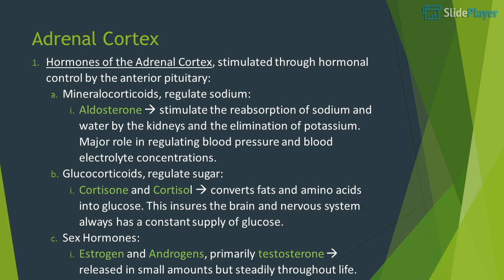Adrenal cortex hormones are stimulated through hormonal control by the anterior pituitary. Mineralocorticoids regulate sodium: aldosterone stimulates the reabsorption of sodium and water by the kidneys and the elimination of potassium, playing a major role in regulating blood pressure and blood electrolyte concentrations. Glucocorticoids regulate sugar: cortisone and cortisol convert fats and amino acids into glucose, ensuring the brain and nervous system always have a constant supply of glucose. Sex hormones: estrogen and androgens, primarily testosterone, are released in small amounts but steadily throughout life.